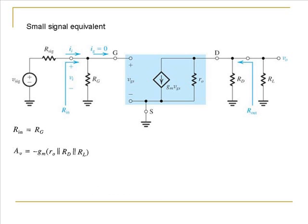Let's calculate the output resistance of this amplifier. The output resistance is the resistance seen when looking into the amplifier from the output. It can be seen to be the parallel combination of the drain resistance Rd and the resistance Ro. The resistance offered by a constant current source is of course infinite.